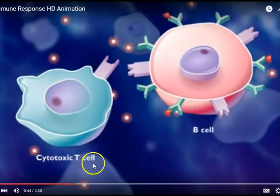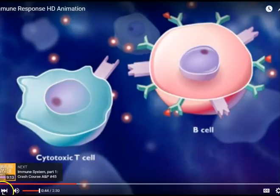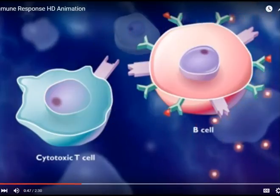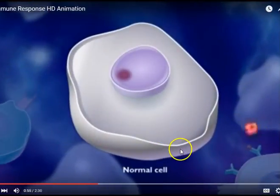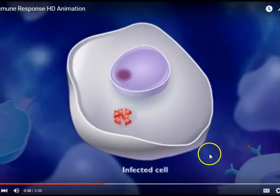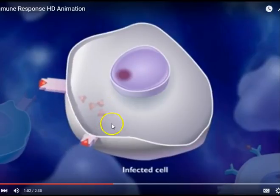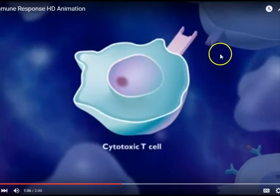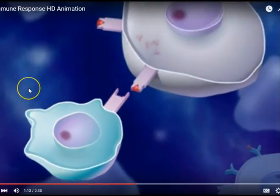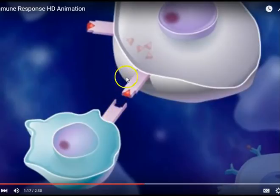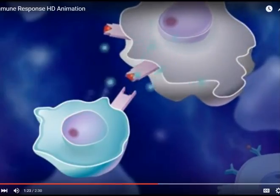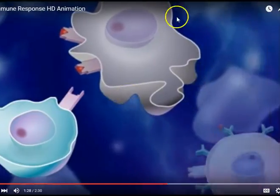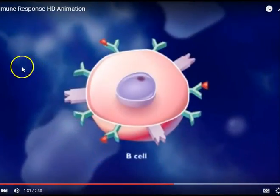The immune system forks in two directions. Cytotoxic T-cells perform one function and B-cells perform another. When a cell is infected by a virus, it starts expressing antigens on its surface. A cytotoxic T-cell — activated by the interleukin chemical released earlier — recognizes the infected cell via those antigens and releases chemicals that cause that cell to auto-destroy, so it doesn't have a chance to spread the disease.